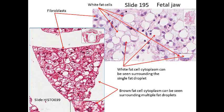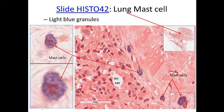This is loose connective tissue showing the chicken-wire nature of fat cells. Fat cells can have a single large droplet — called white fat — or multiple small droplets — called brown fat. These are actually white fat cells from a fetal jaw. In fetal tissue the cell is not fully developed, so you can see the cytoplasm making the droplet inside. The cells surrounding the fat droplet are more visible in fetal tissue than in adult tissue.